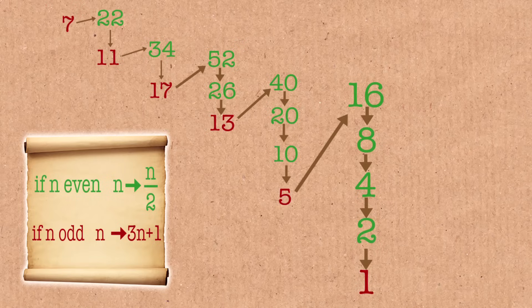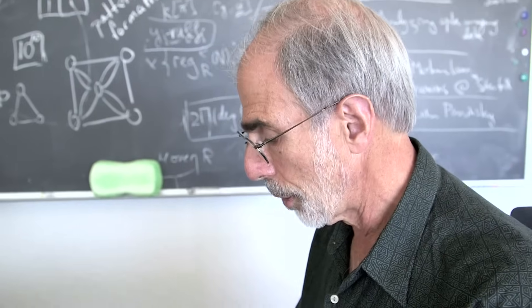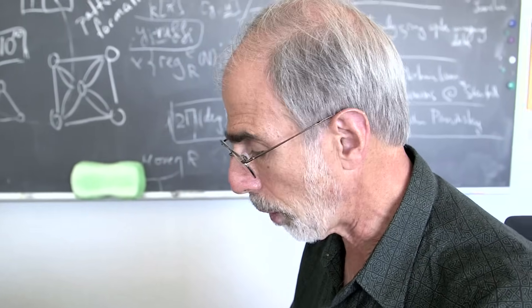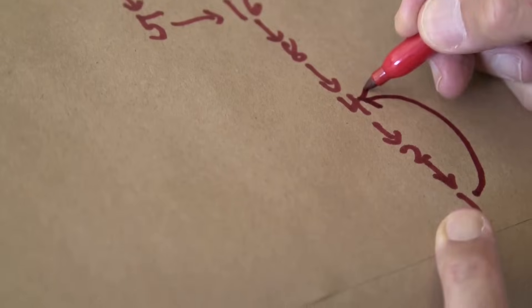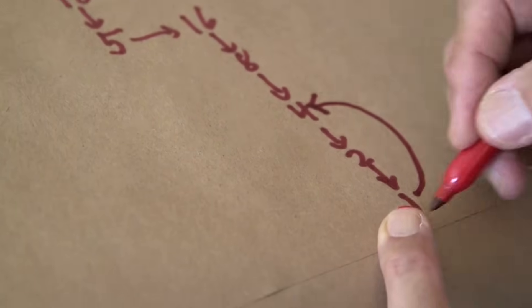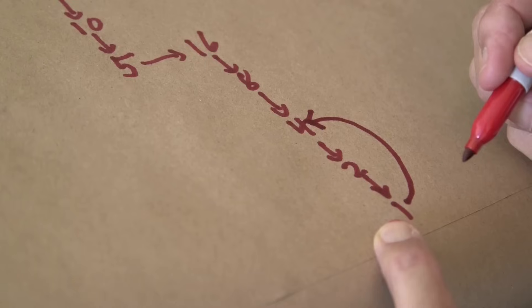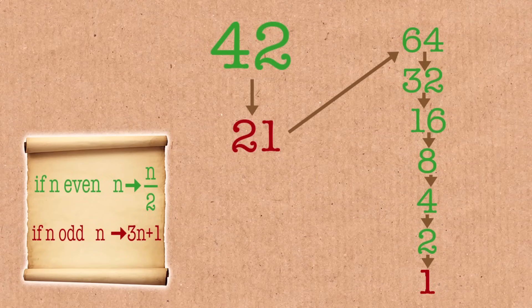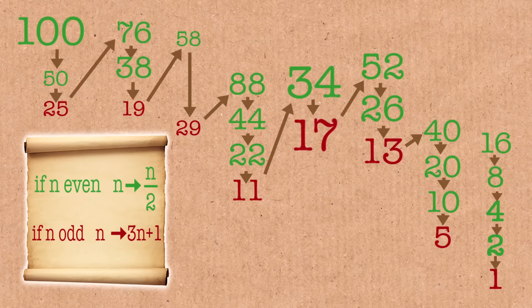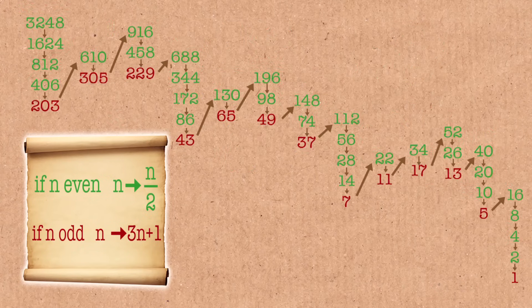If I do it again, something interesting happens. I go 3 times 1 plus 1 is 4. Whoops, I'm back to 4. But now I'm just going to cycle forever, going through 1 over and over again. So I got to 1. 7 got to 1. Now, people have tried lots of numbers beginning this way, and so far all of them have gone to 1.